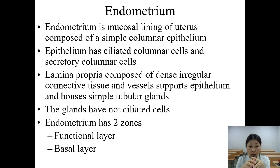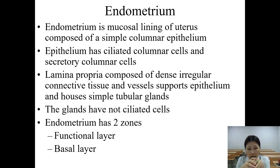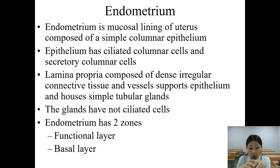The endometrium is the mucosal lining of the uterus, composed of a simple columnar epithelium. The epithelium has ciliated columnar cells and secretory columnar cells. The lamina propria is composed of dense irregular connective tissue and vessels that support the epithelium and house simple tubular glands. The glands have non-ciliated cells. The endometrium has two zones: the functional layer and the basal layer.